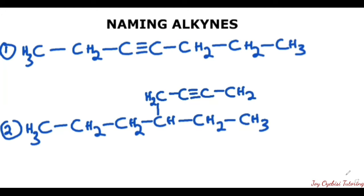For the first question here, this is a straight chain alkyne — it has no branches, so it is easier. The only thing is that when we are counting, we need to count from the side that will give the triple bond a lower number.